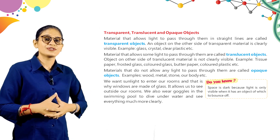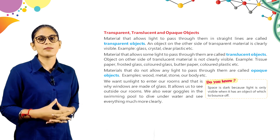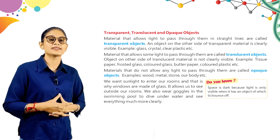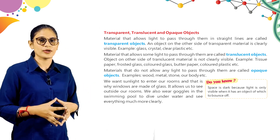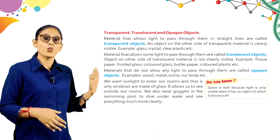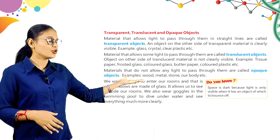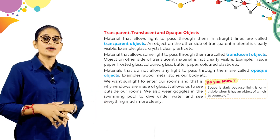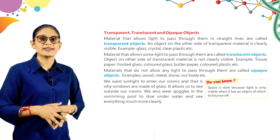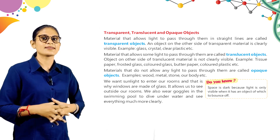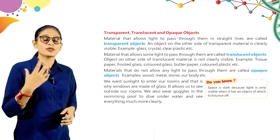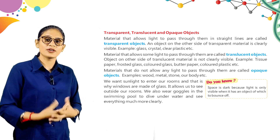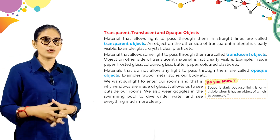Materials that do not allow any light to pass through them are called opaque objects. Examples: wood, metal, stone, our body, etc. Do you know? Space is dark because light is only visible when it has an object off which to bounce. Space is dark because light only becomes visible when there is some object for it to bounce back from.